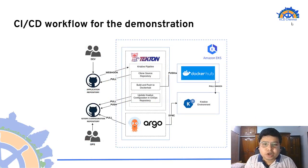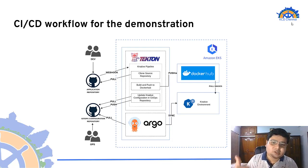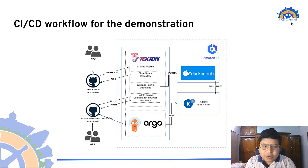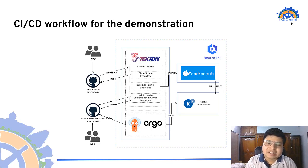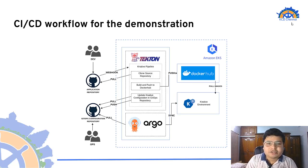Now let's understand the CI/CD workflow of our demonstration. Whenever a developer pushes new code changes to the application repository, they should see the latest changes reflected in the website URL. To achieve this, we create the CI/CD system. Whenever the developer pushes the application code to the application repository, a webhook is triggered, which informs the event listener running inside the Kubernetes cluster that an event has occurred in the application repository. The event listener then transfers the response to the trigger binding.